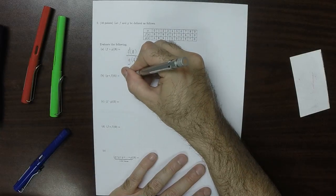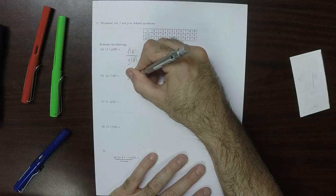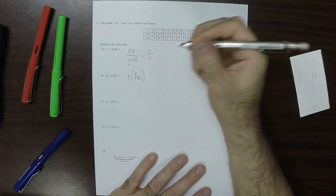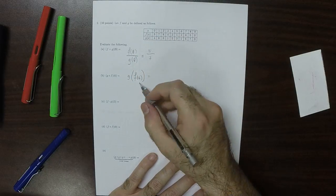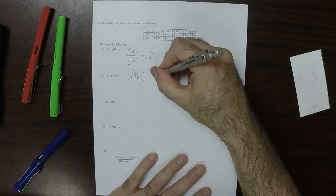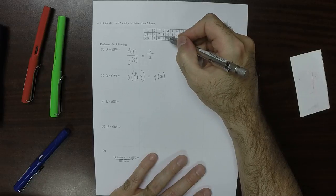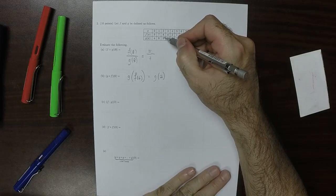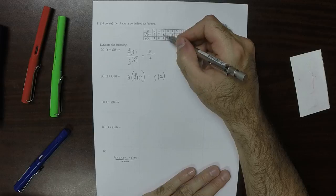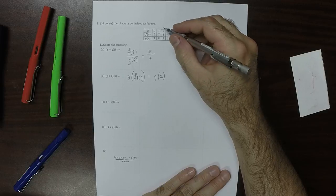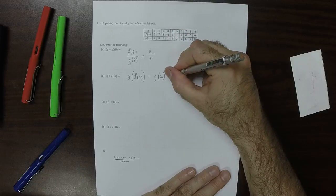This is by definition G of F of 6. So if we plug 6 into F, we get a 2, so this is G of 2. And then if we plug a 2 into G, then we get a 9. So, 9.